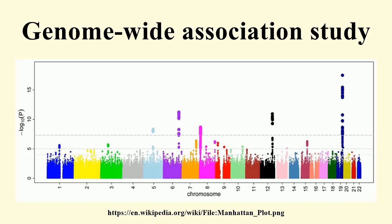Another landmark publication in the history of GWAS studies was the Wellcome Trust Case Control Consortium study, the largest GWAS ever conducted at the time of its publication in 2007. The WTCCC included 14,000 cases of seven common diseases and 3,000 shared controls, and was successful in uncovering many new disease genes. Since these first landmark studies, one general trend has been towards larger and larger sample sizes — by the end of 2011, the largest sample sizes were in the range of 200,000 individuals.